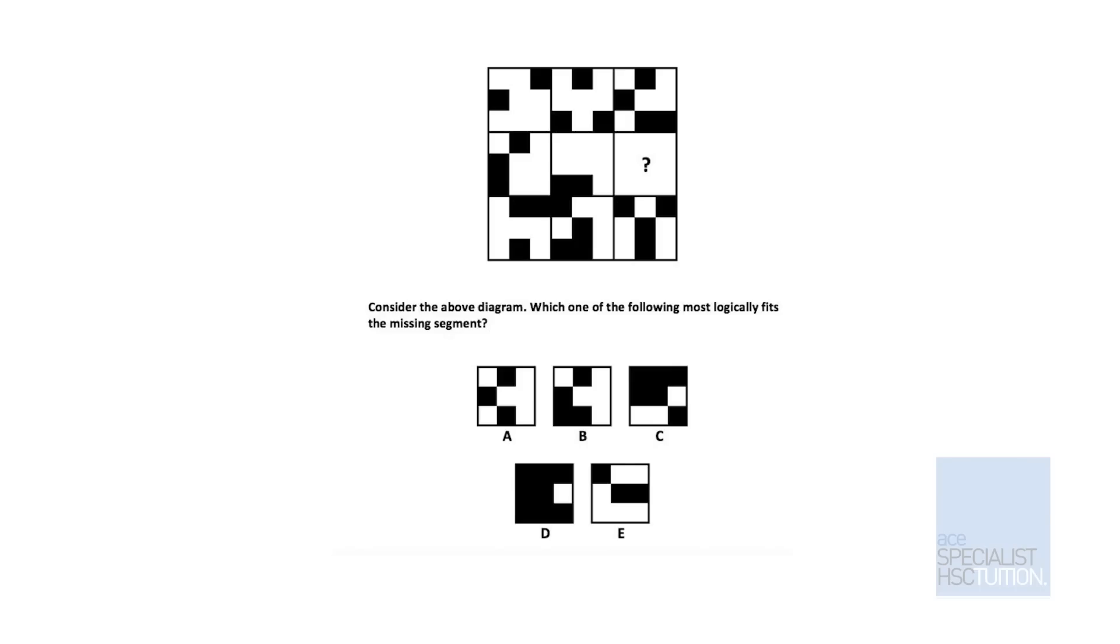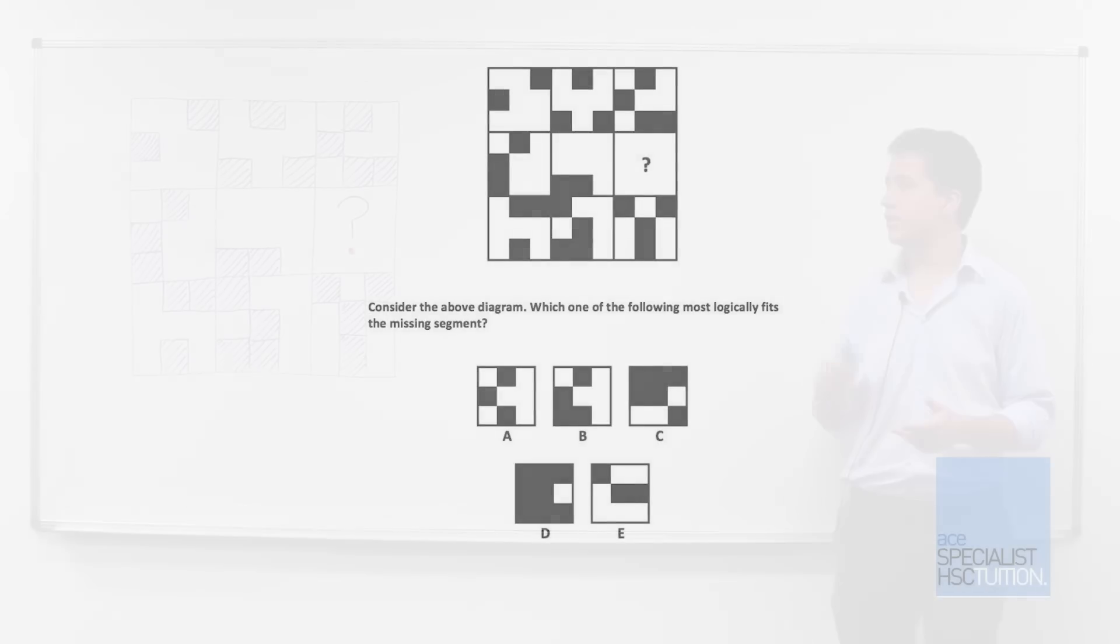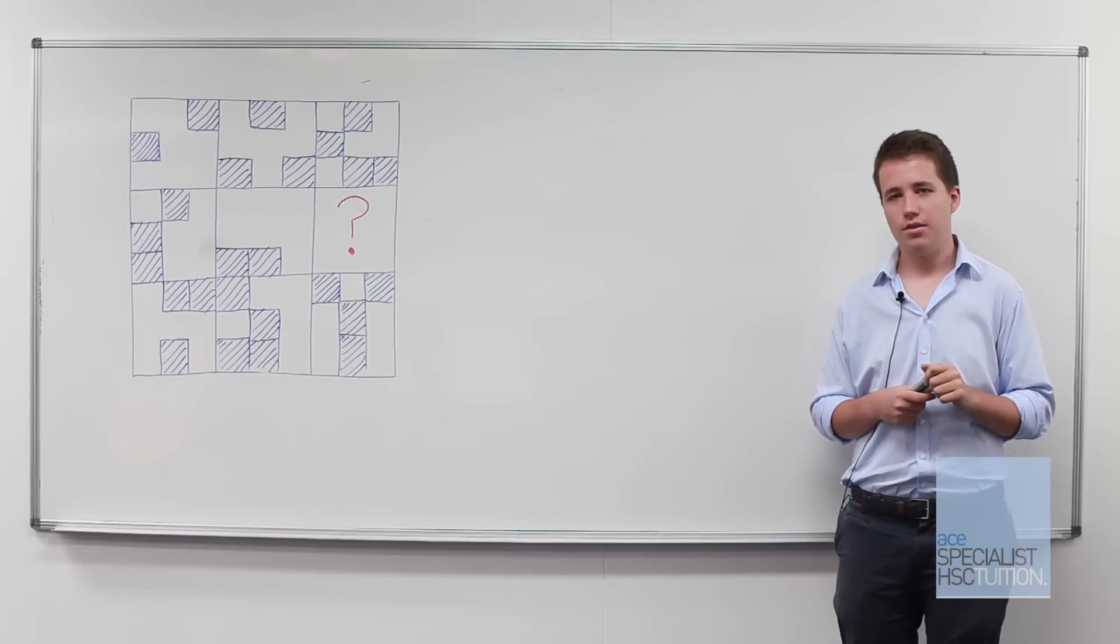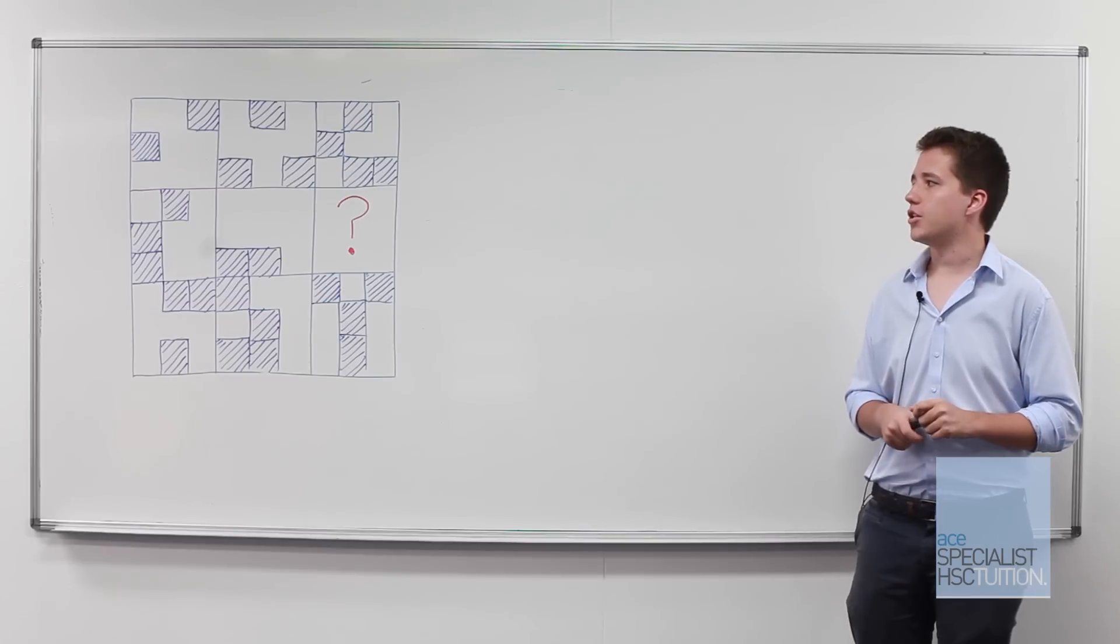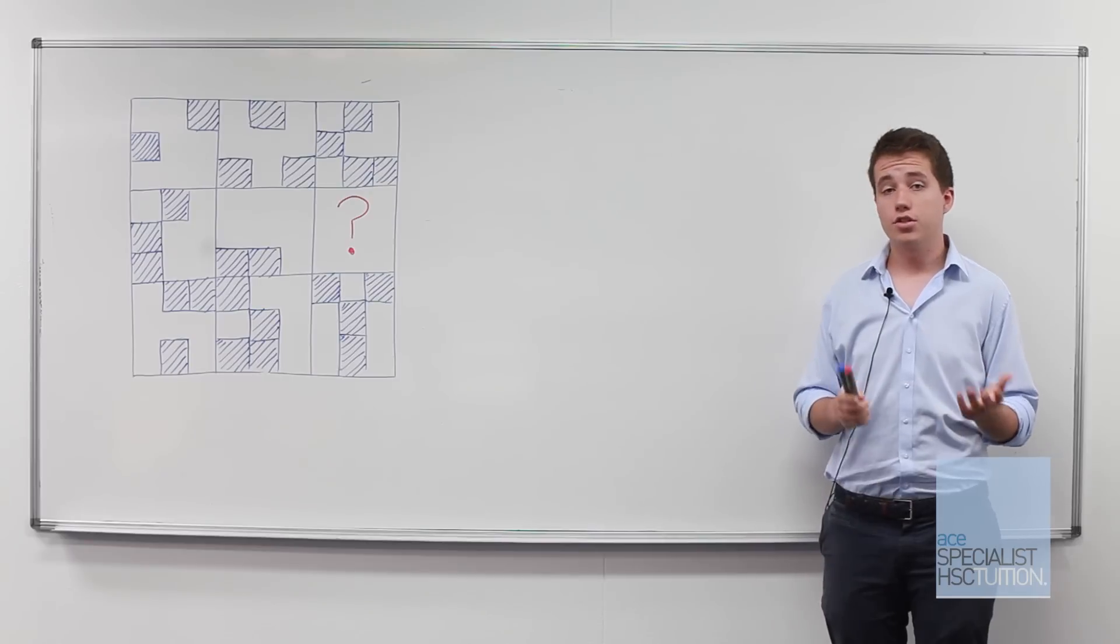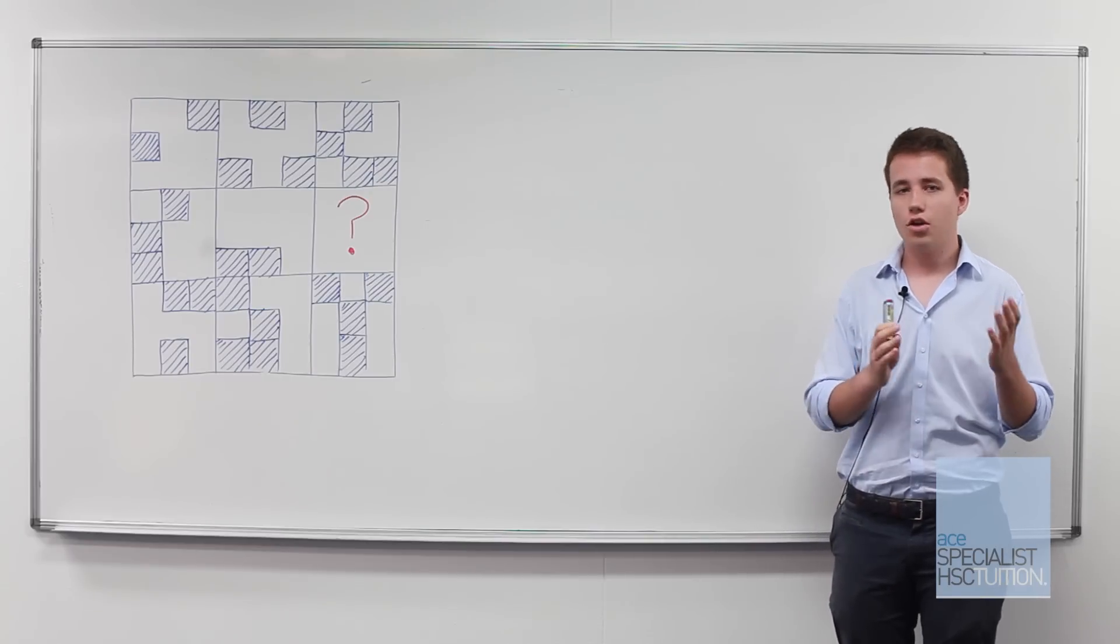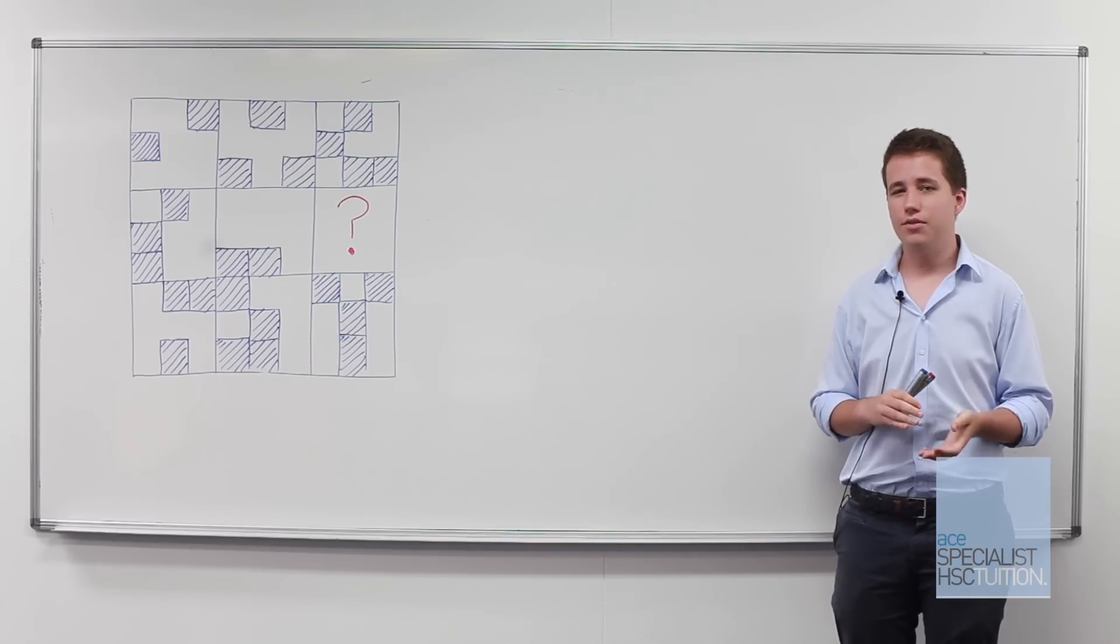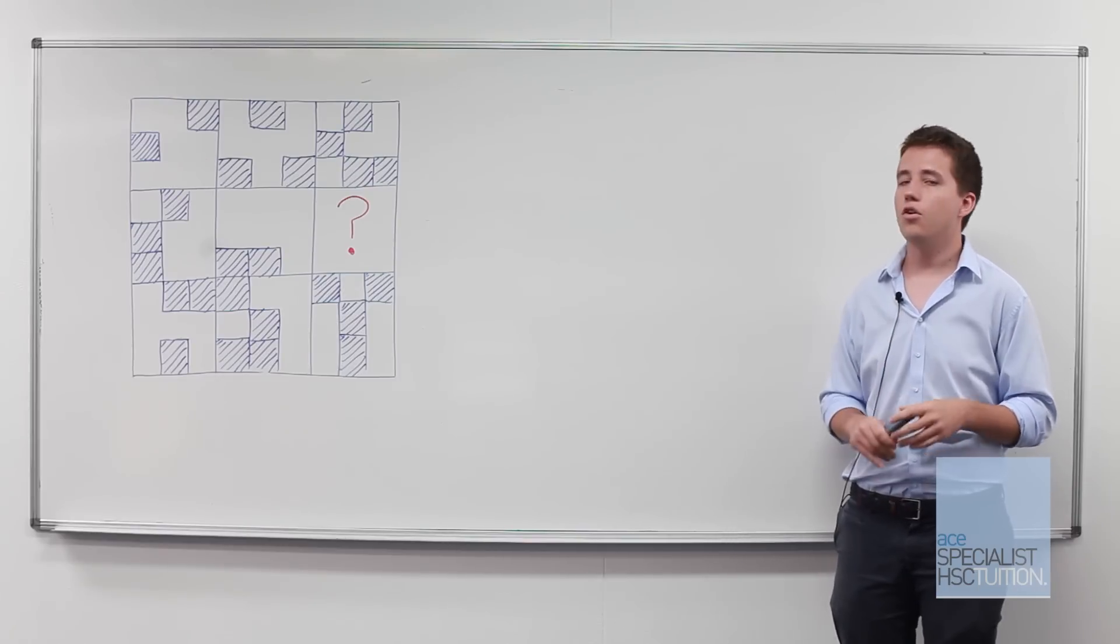We're going to be looking at a more difficult Section 3 question, which involves us looking at a large 3x3 grid and seeing what kinds of patterns of contribution appear within that grid to produce the missing segment. As you can see from the diagram, what we've got here is a grid, and we've got a missing segment within the grid. This grid is composed of a 3x3 grid of larger squares, and then within each of those large squares we've got a smaller 3x3 grid, which is variably filled with either white space or black squares.